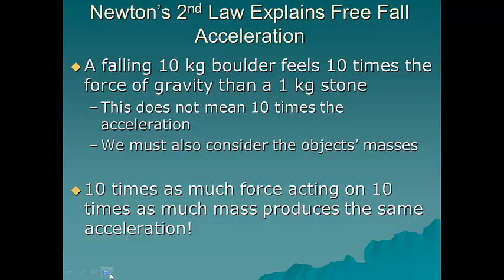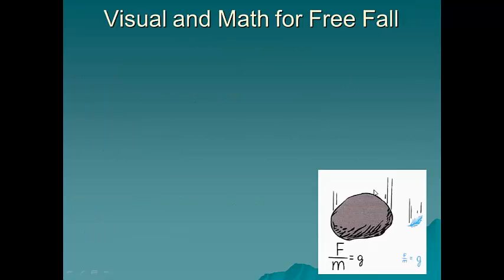Let's take a look at this in terms of a visual and math. So in this visual we've got a big force and a big mass. That's our boulder. So it would be g and we're assuming this is in a vacuum so that there's no air resistance on this feather.